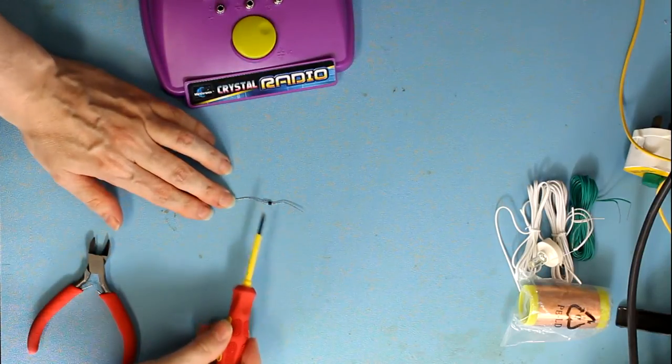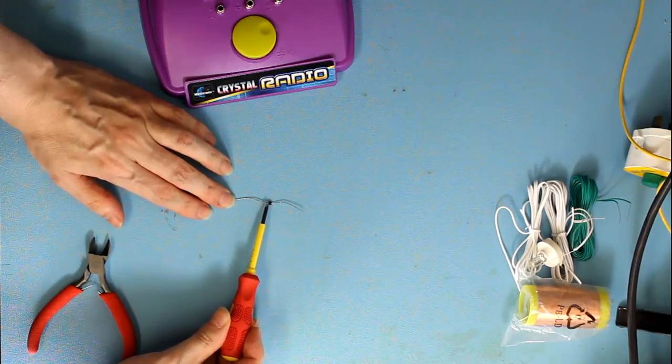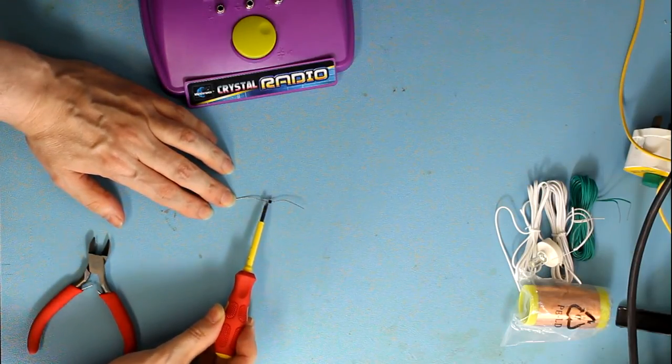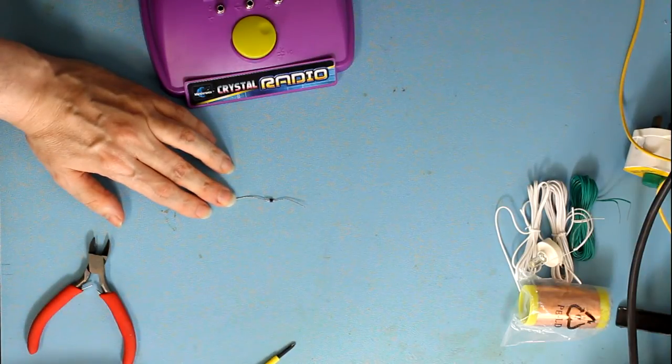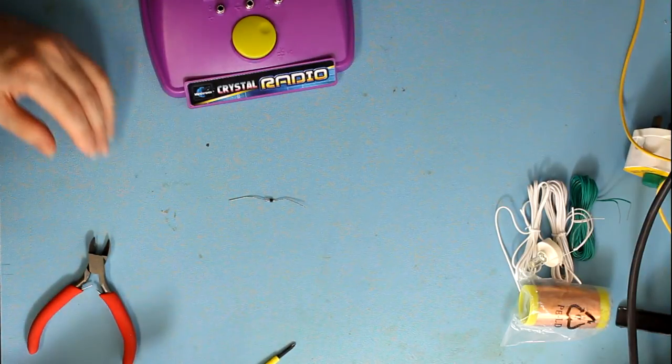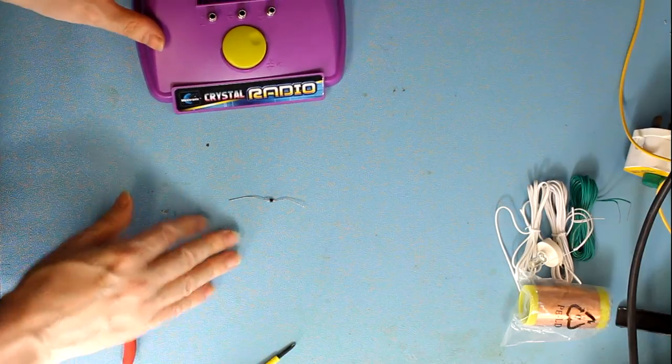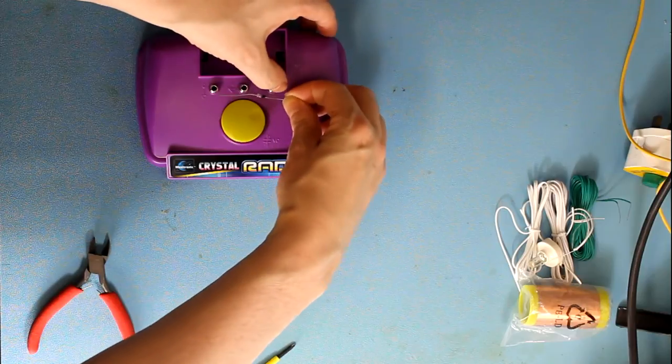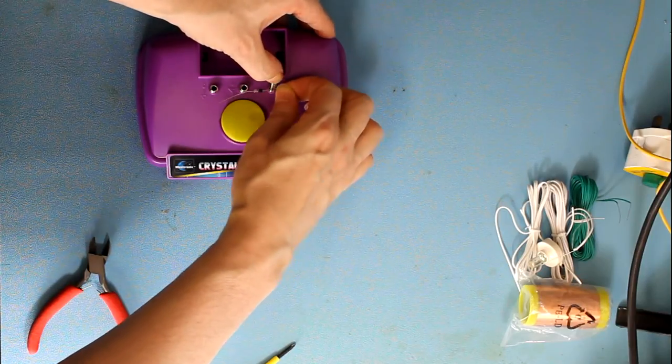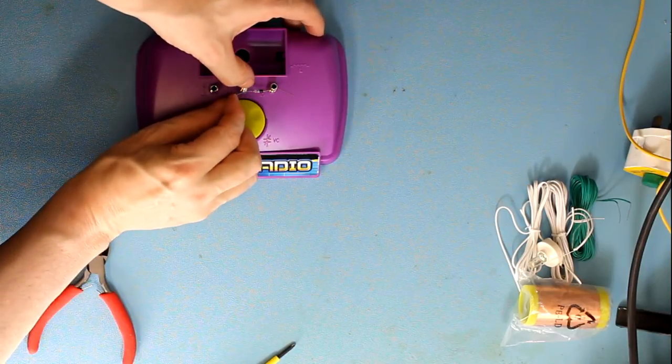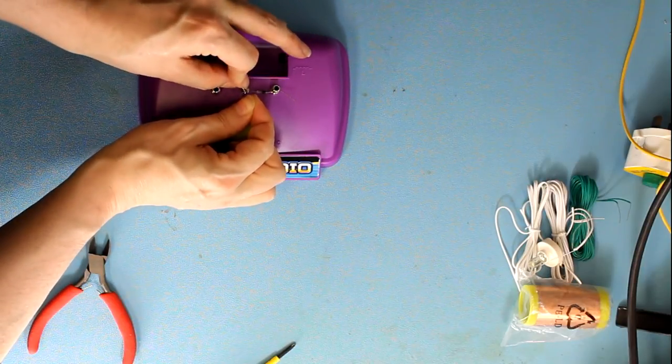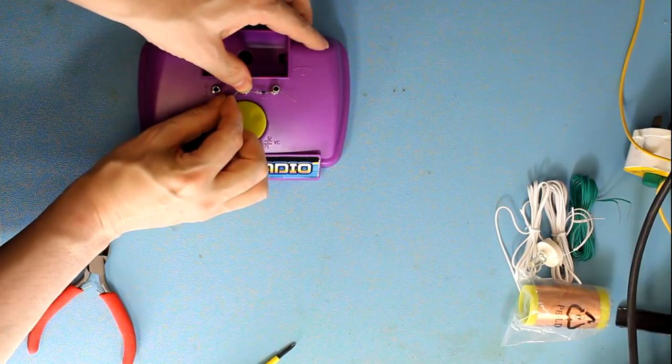Now you'll notice on the diode that there's a black line. This black line indicates where your cathode is. The cathode being the negative part of your diode. And on here that goes between your diode connection and the antenna connection. So bend your leads over and pop those in.